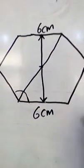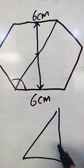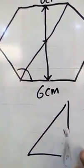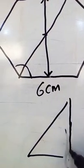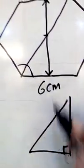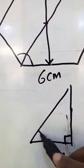That means I'm going to have a right angle triangle. I'm assuming a right angle triangle, and if it divides this side into two, then I'll have 3 cm here.